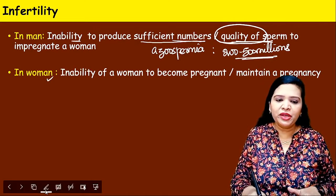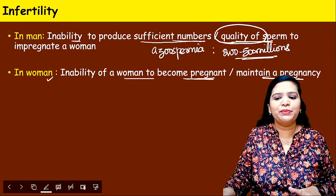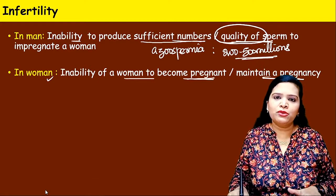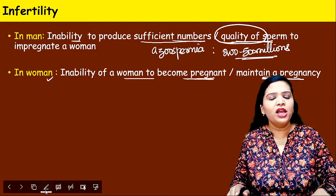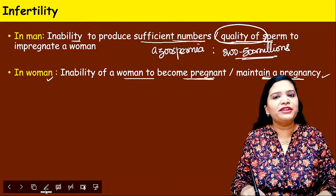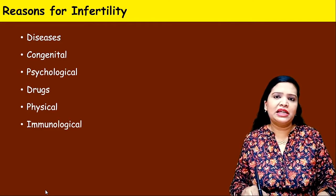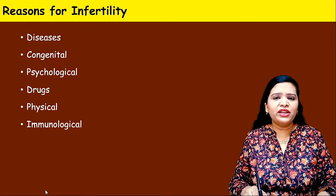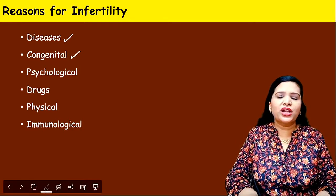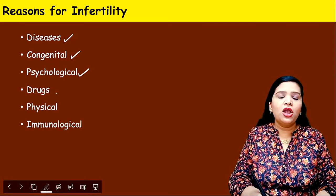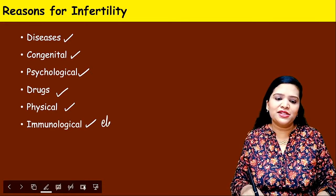In the case of female infertility, there is an inability of a woman to become pregnant or to maintain a pregnancy. She either cannot become pregnant, or if she does become pregnant, the pregnancy won't continue — it will get aborted. The reasons for infertility are enormous: diseases, congenital reasons, psychological problems, usage of certain drugs, physical problems, or immunological problems.